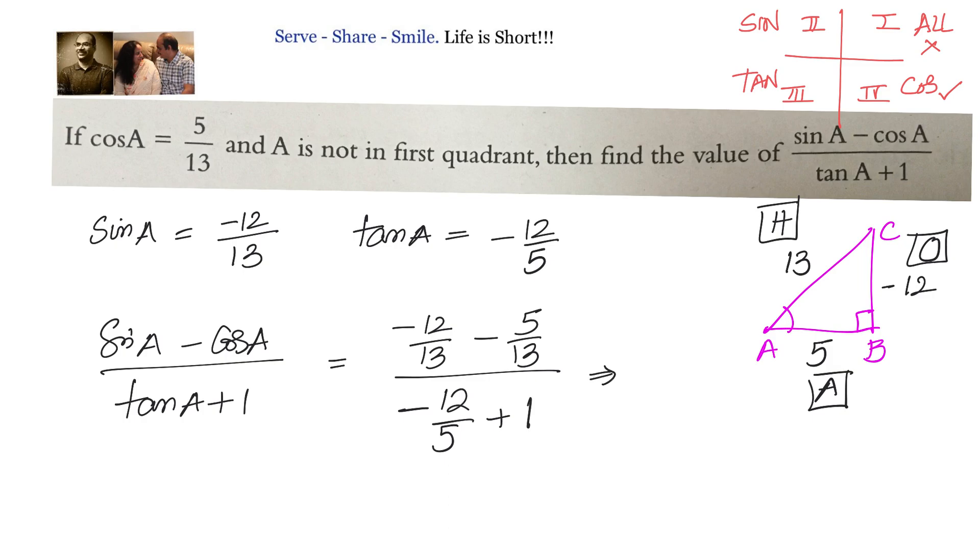Let us simplify this. We will have minus 17 by 13 divided by 1 minus 12 by 5 that is minus 7 by 5.